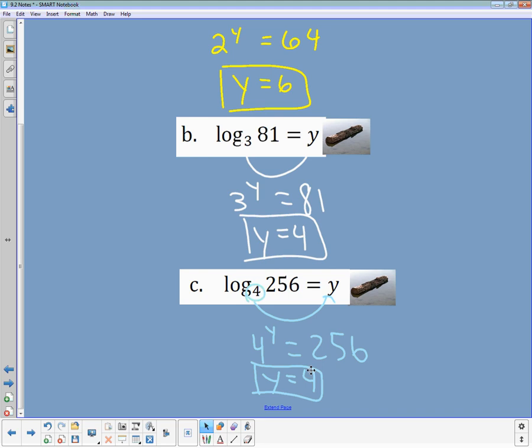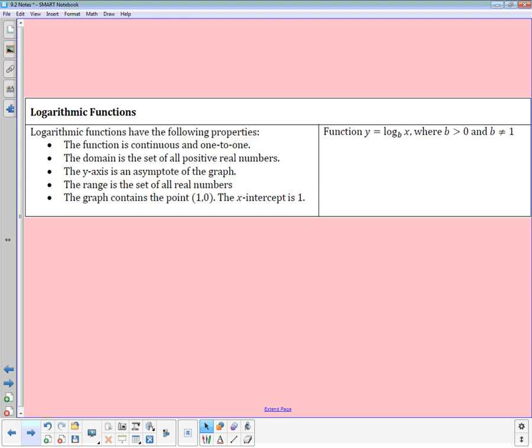So let's just look at some properties of logarithmic functions. These are all of the properties that I know that my logarithmic function has. I know that the function is continuous and one-to-one, meaning it doesn't stop. It's a continuous function, unlike those rational functions where we had breaks in continuity. Here, this one is continuous. One-to-one just means that it's a function. The domain is the set of all positive real numbers. The y-axis is an asymptote of the graph. The range is the set of all real numbers. So that's where those have switched from the exponentials. In exponentials, we had domain being all reals, and range being all positives most of the time. And then the graph contains the point 1, 0. That means the x-intercept is 1.